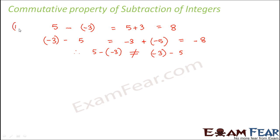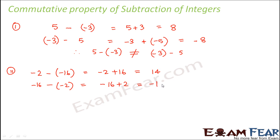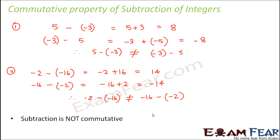Let us take another example: minus 2 minus minus 16 equals minus 2 plus 16, which equals 14. Reversing the position: minus 16 minus minus 2 equals minus 16 plus 2, which equals minus 14. Here again, minus 2 minus minus 16 is not equal to minus 16 minus minus 2. So with these examples we can clearly say that subtraction is not commutative. For any two integers a and b, a minus b is never equal to b minus a.